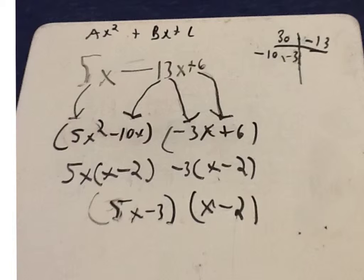And that would be negative 10 and negative 3. You then bring down a and c and then rewrite b using numbers from the chart.